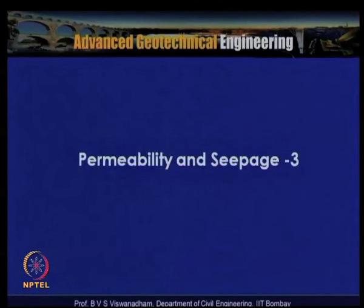Welcome to lecture number 14 of the advanced geotechnical engineering course. In the previous lecture we introduced methods for measuring permeability — constant head test and falling head test — and discussed the chief differences between these two test methods. In this lecture, permeability and seepage part 3, we will discuss factors affecting permeability, different types of flows, and the mathematics connected with the seepage phenomenon.